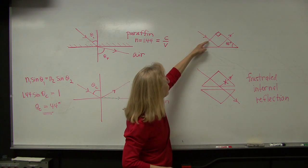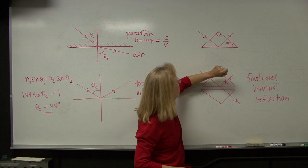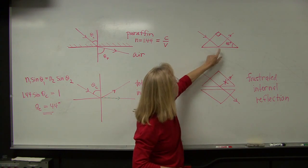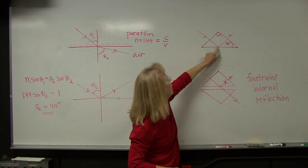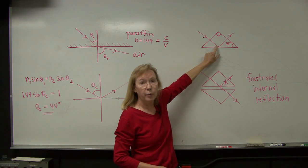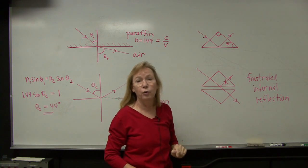And then because it's an isosceles triangle, I know that this angle is 45 degrees. This angle is 45 degrees. And the angle that that electromagnetic wave impacts the interface at is going to be 45 degrees as well.